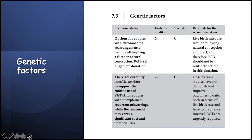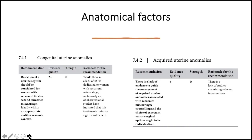For genetic factors, options for couples with chromosomal rearrangements include attempting further natural conception, pre-implantation genetic testing for structural rearrangements, or gamete donation, and this must be discussed with the couple. For anatomical factors, resection of a uterine septum should be considered for women with recurrent first or second trimester miscarriages, ideally within an audit or research context. There is a lack of evidence to guide management of acquired uterine abnormalities, and management should be individualized — expectant versus surgical — based on patient choice.